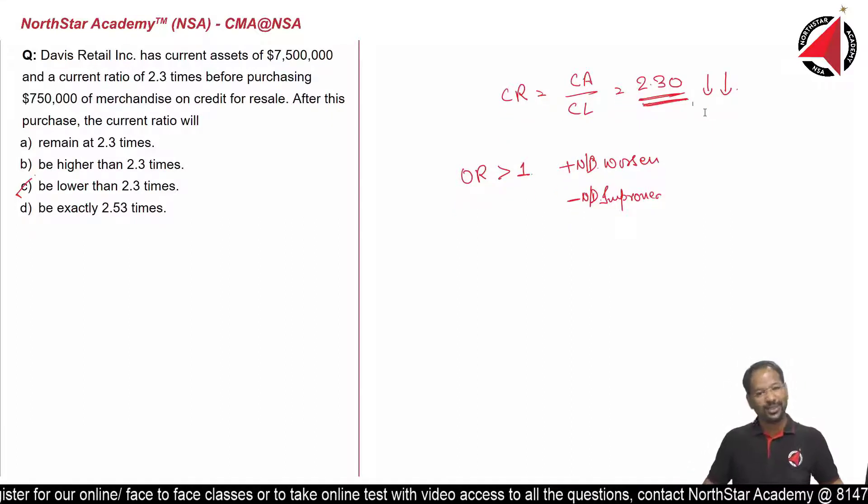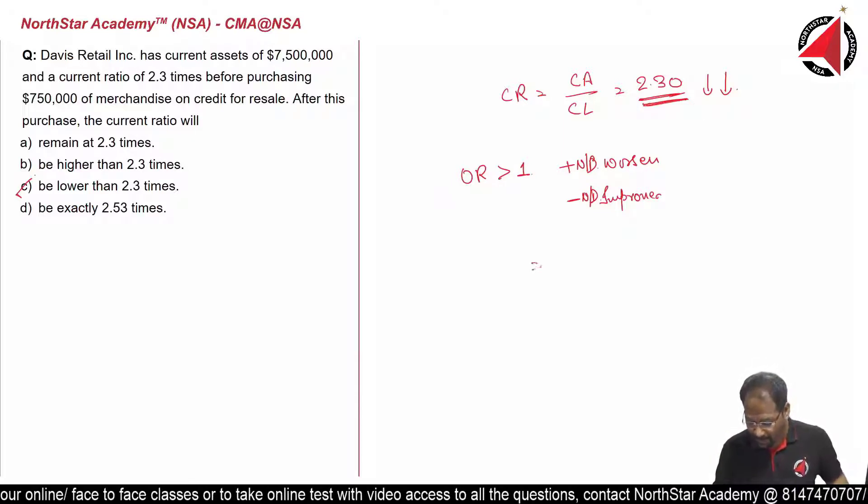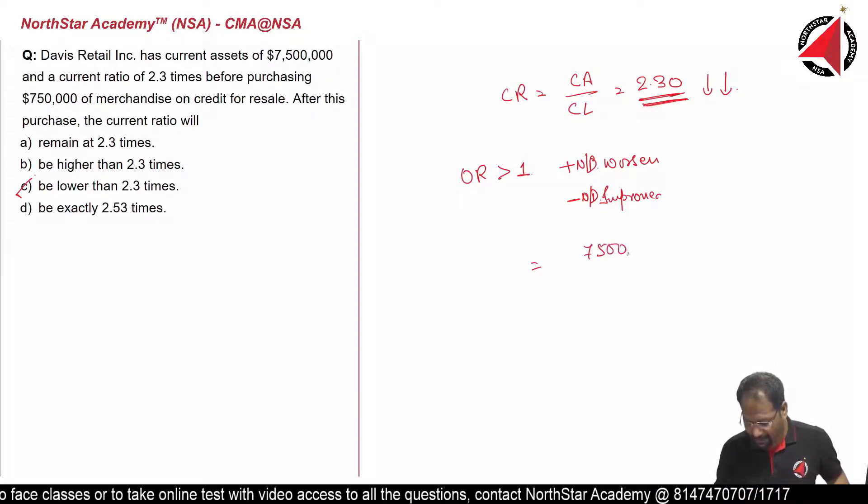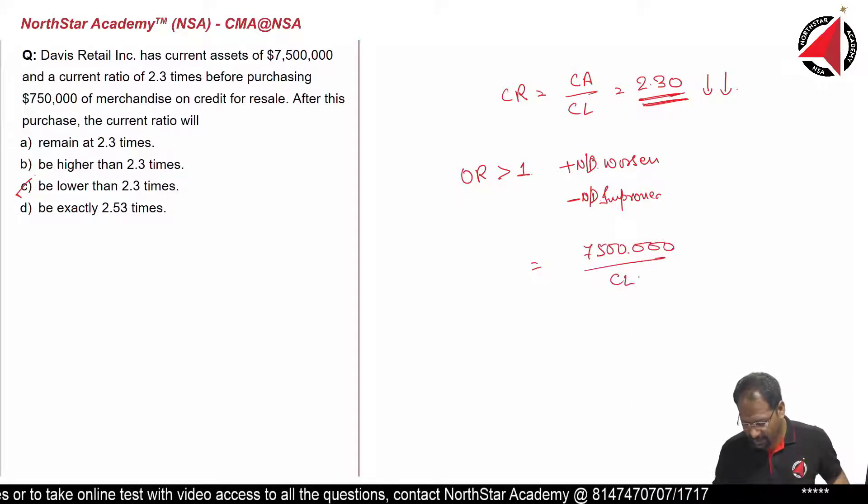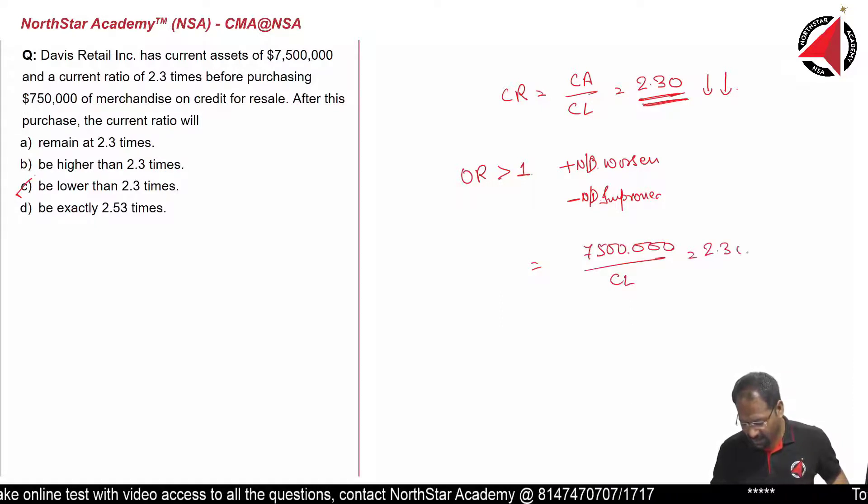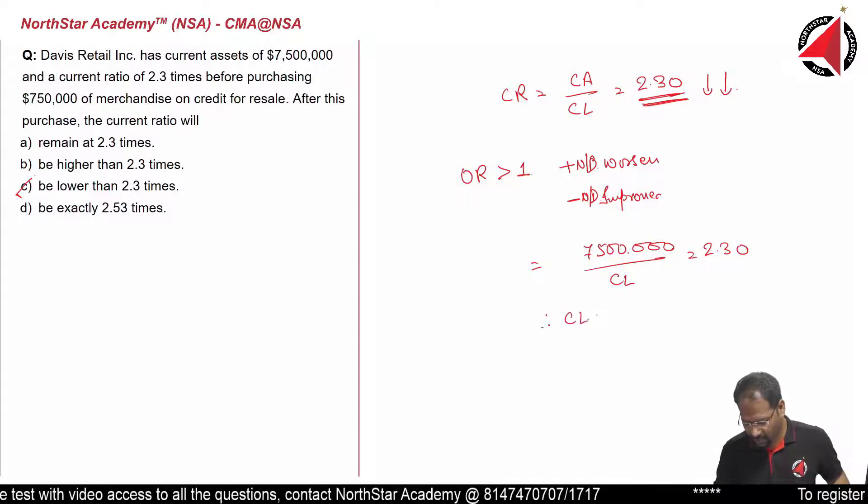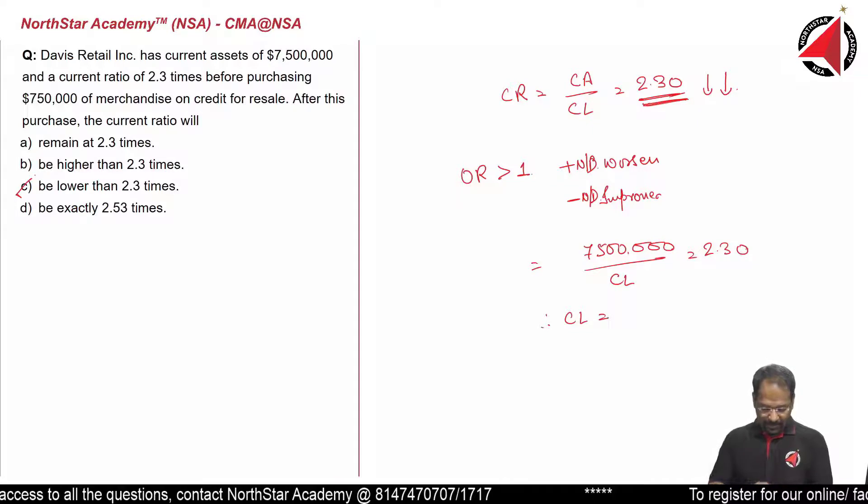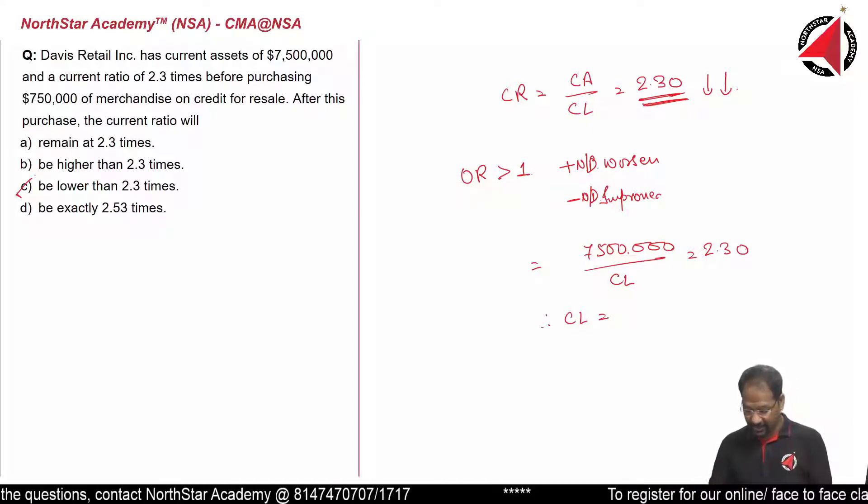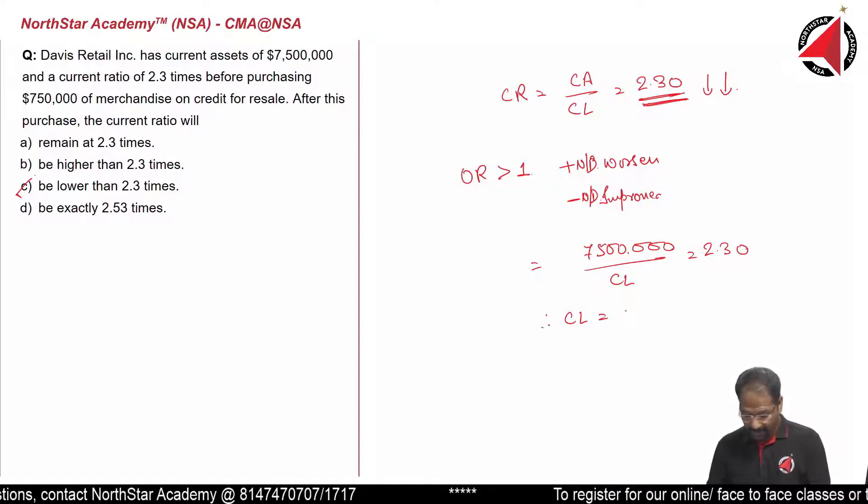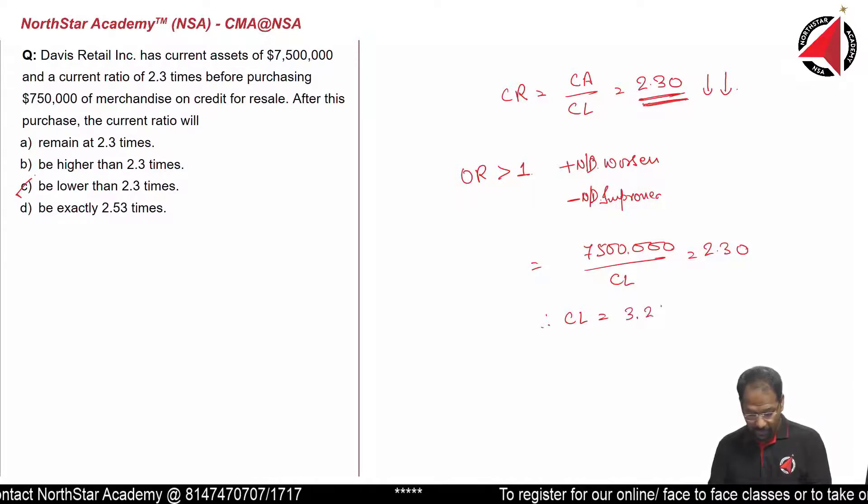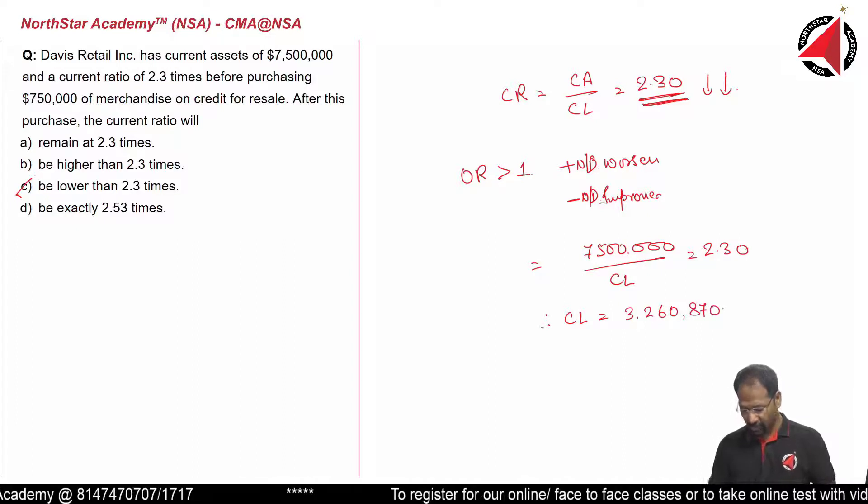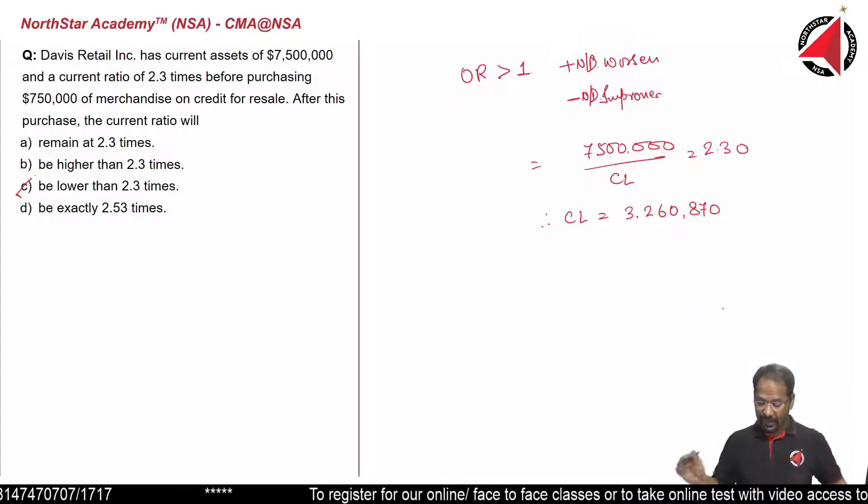Let's calculate and check it once again. Current asset is given as $7.5 million, and current liabilities is not given. We can find out the value of current liabilities. Current liabilities would be 7.5 million divided by 2.3 times, we get $3,260,870. This is the value of current liabilities.